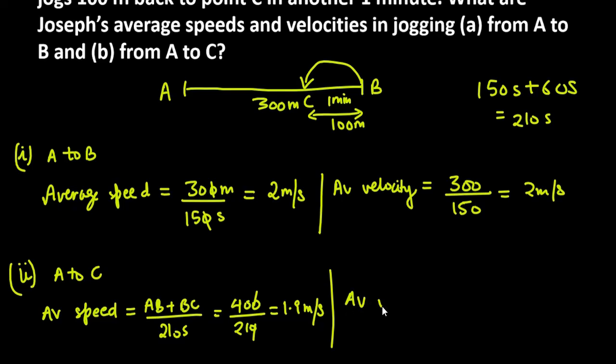Next, aayega aapka average velocity. Velocity kya hota hai aapka? Total displacement over total time taken. Toh, displacement kitna hua is case pe? Matlab, A se C tak ka distance 200 ho ga. Or, total time taken kitna hua? It is 210. Toh, 0 se 0 cancel, 20 over 21 aagaya.